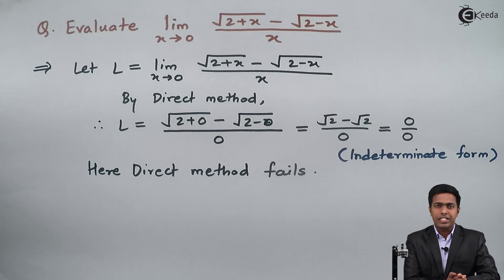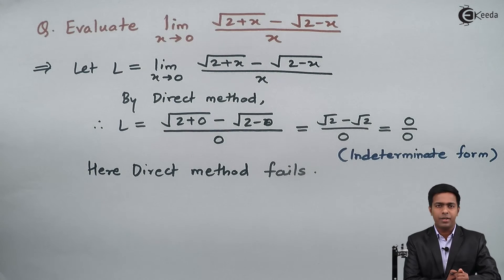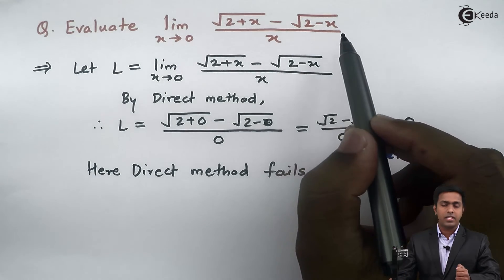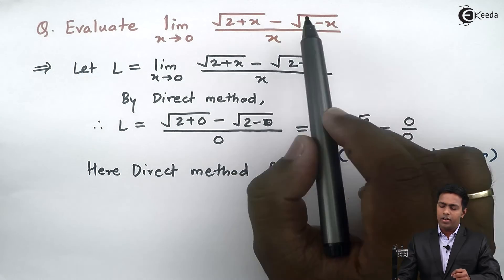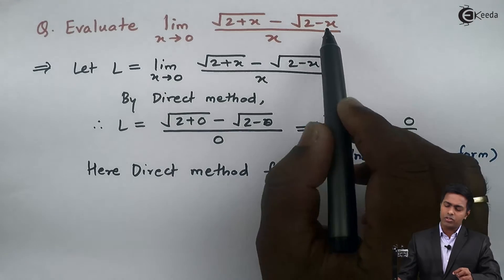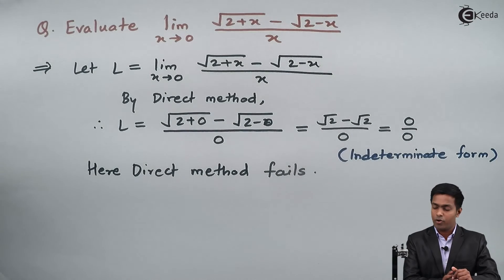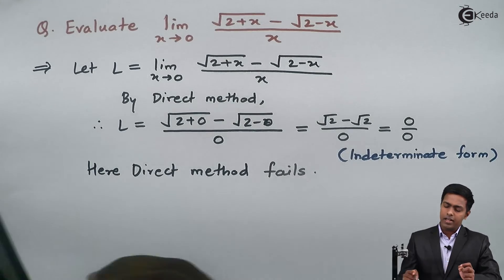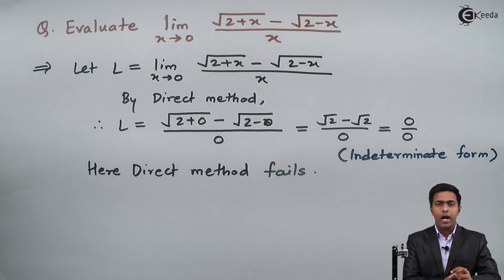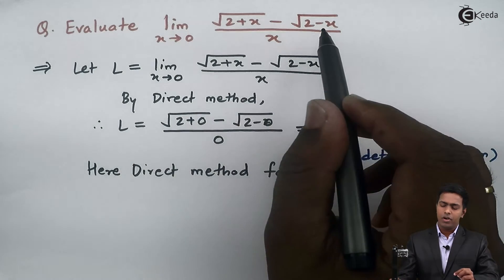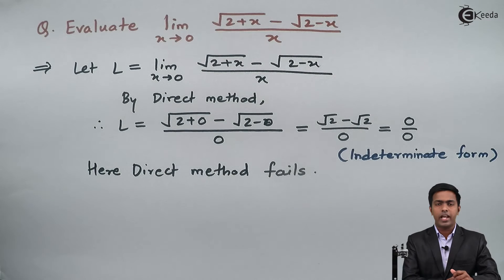Since direct method fails, we need to look for another method to find the value of this limit. Observing the function again, in the numerator we have two square root terms with a negative sign between them. We cannot apply any factorization formula for square root terms. However, if we multiply by the conjugate we can apply the method of rationalization, which will remove the square roots.